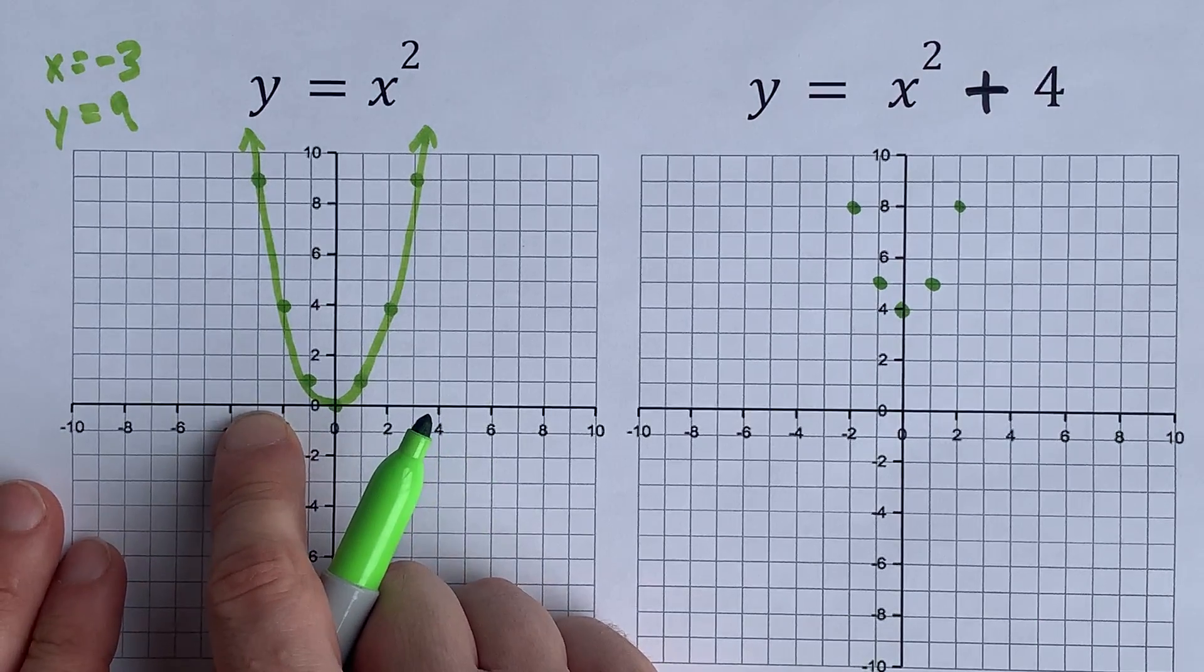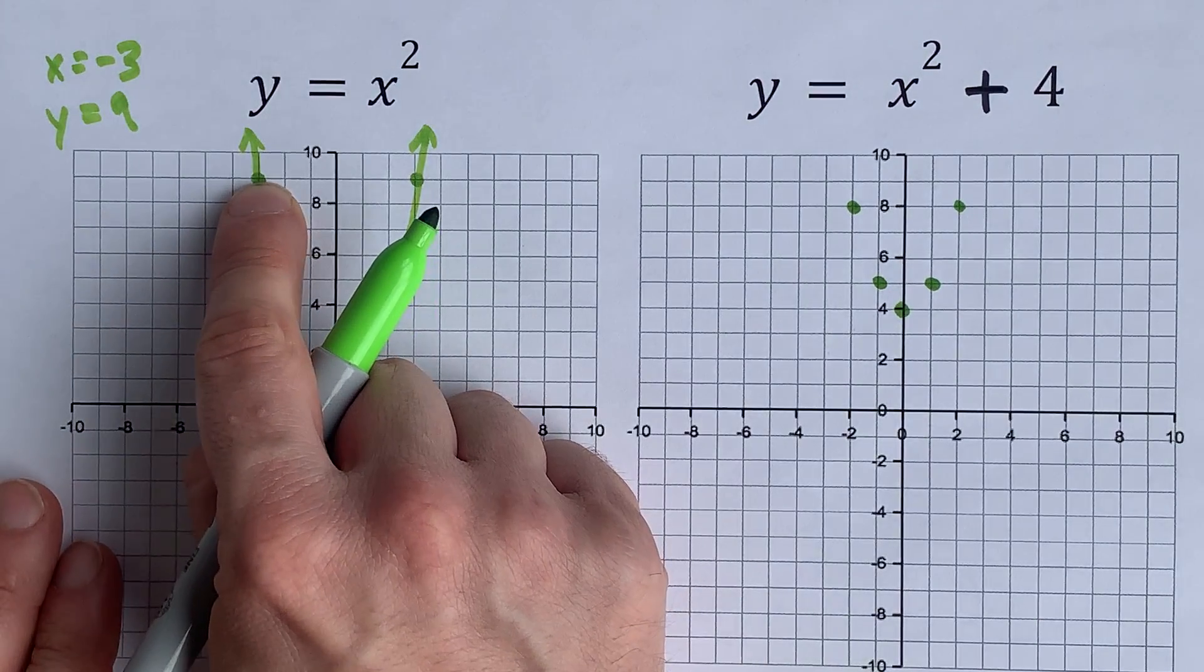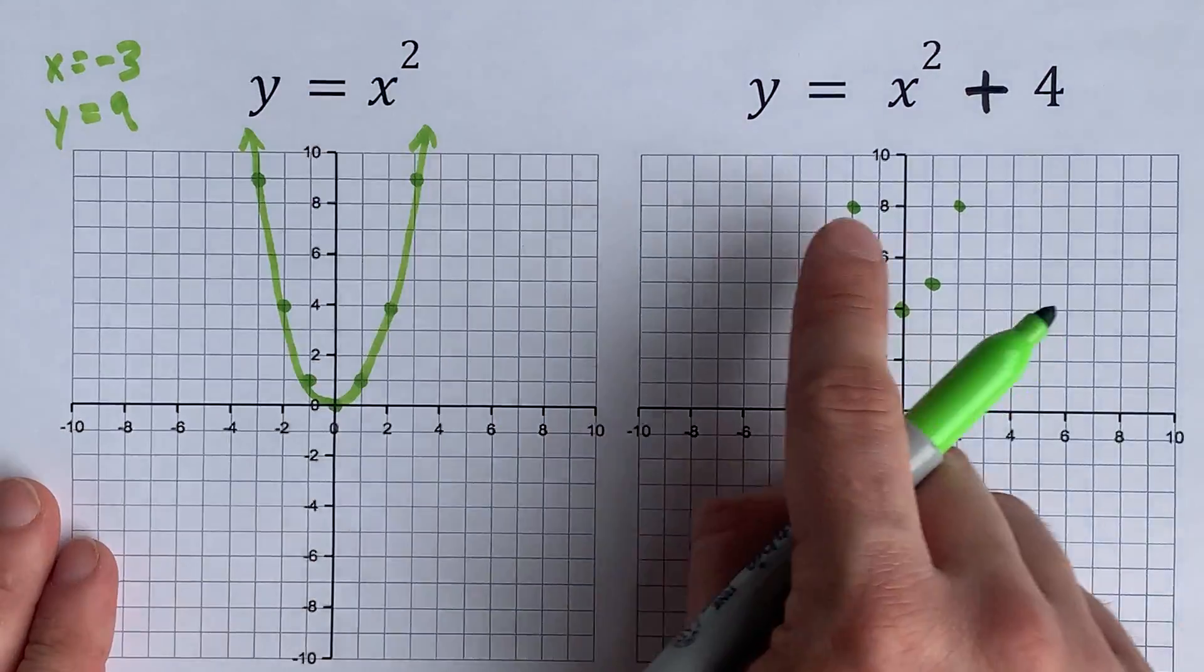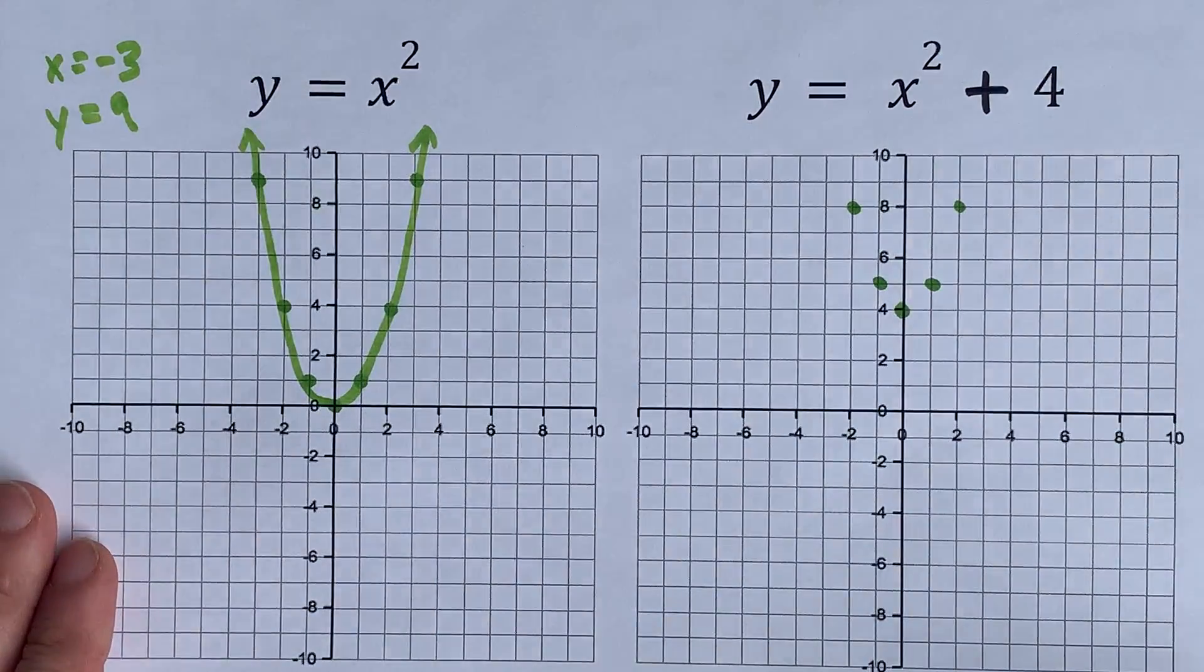And these points at (-3, 9) get shifted up 4 units, but then that's off my grid, so I'm good.